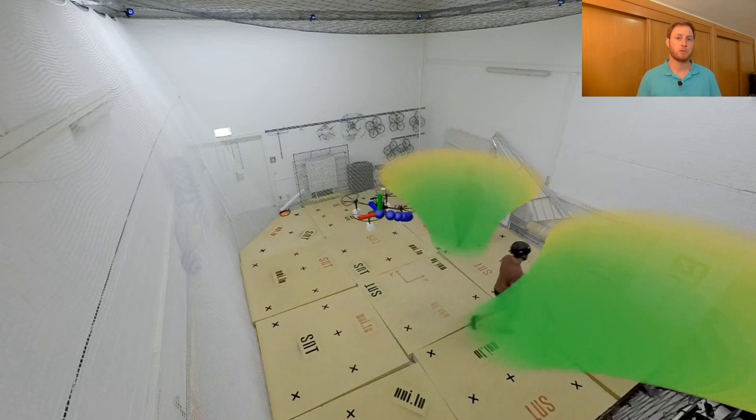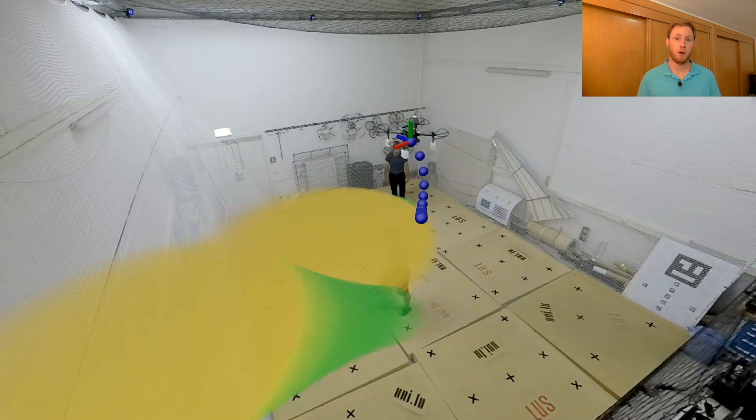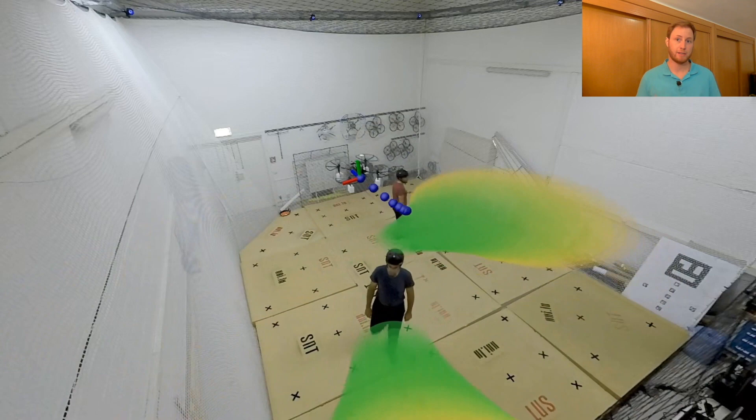To simulate localization and detection, we use a motion capture system and predefined bounding boxes to bound each agent. Then, we employ a unicycle model and an extended Kalman filter to estimate and propagate pedestrians' positions.